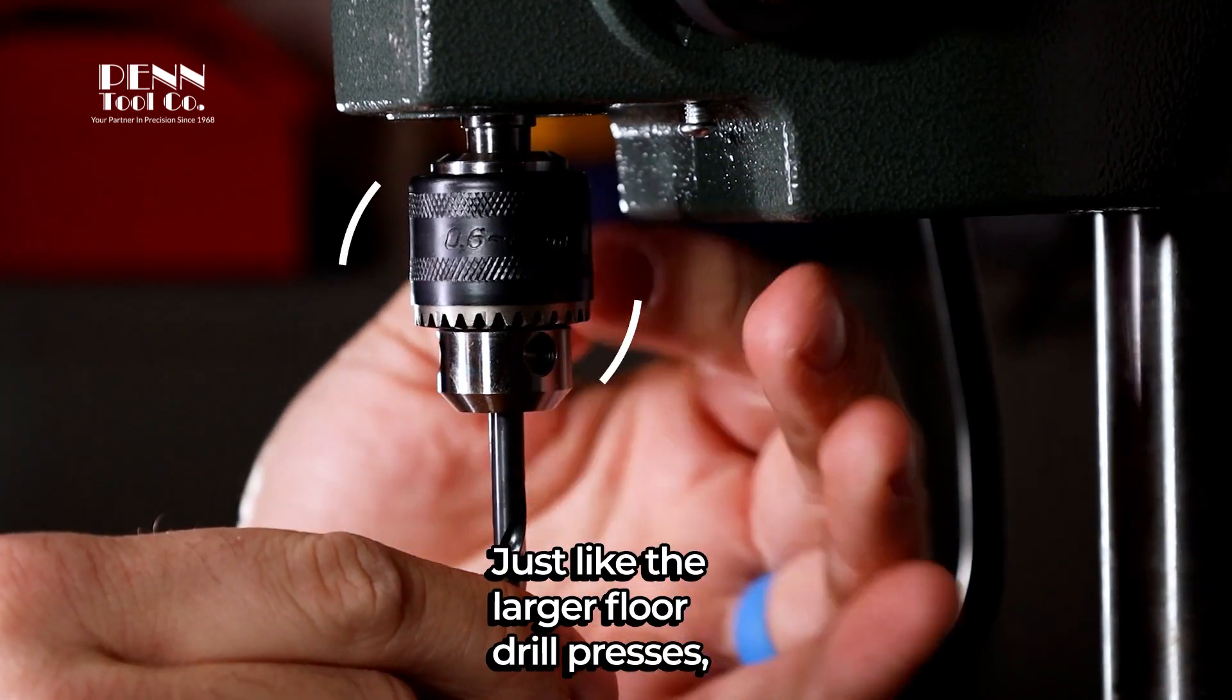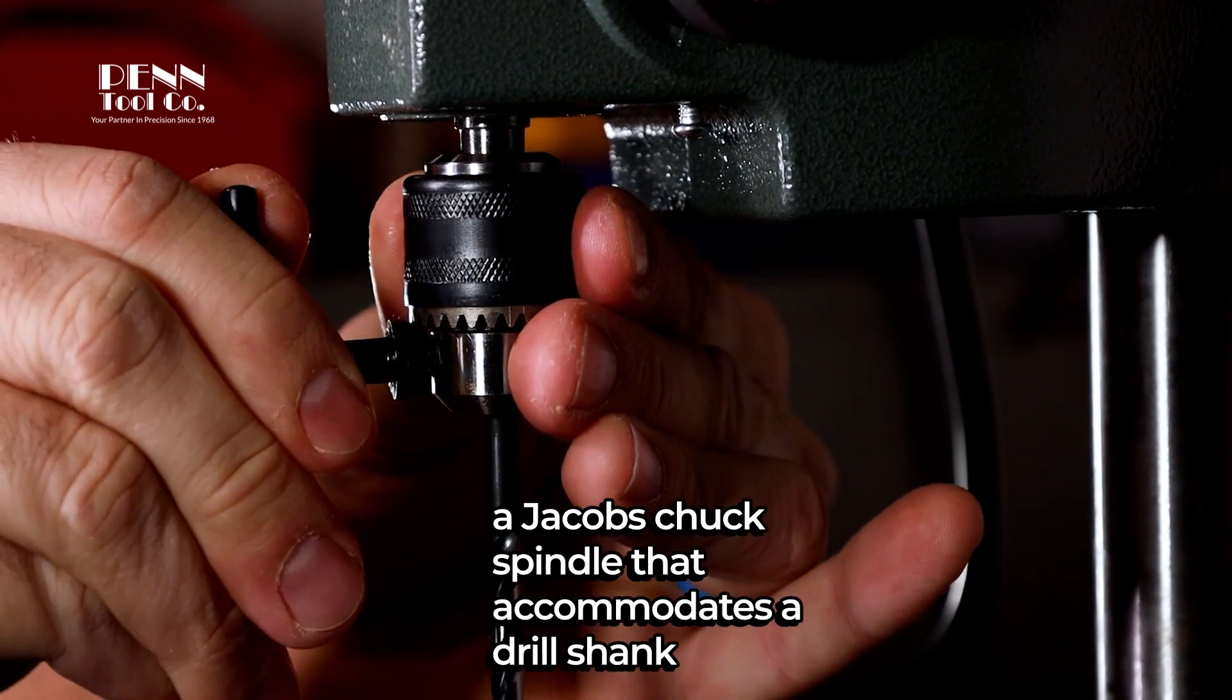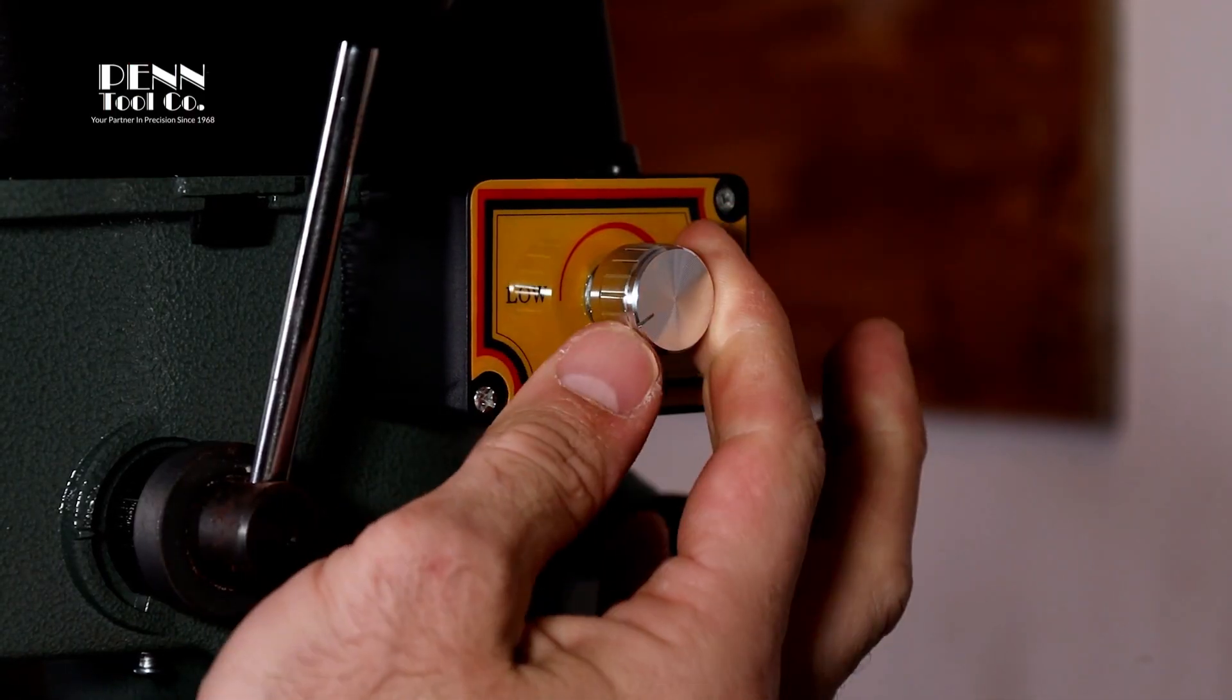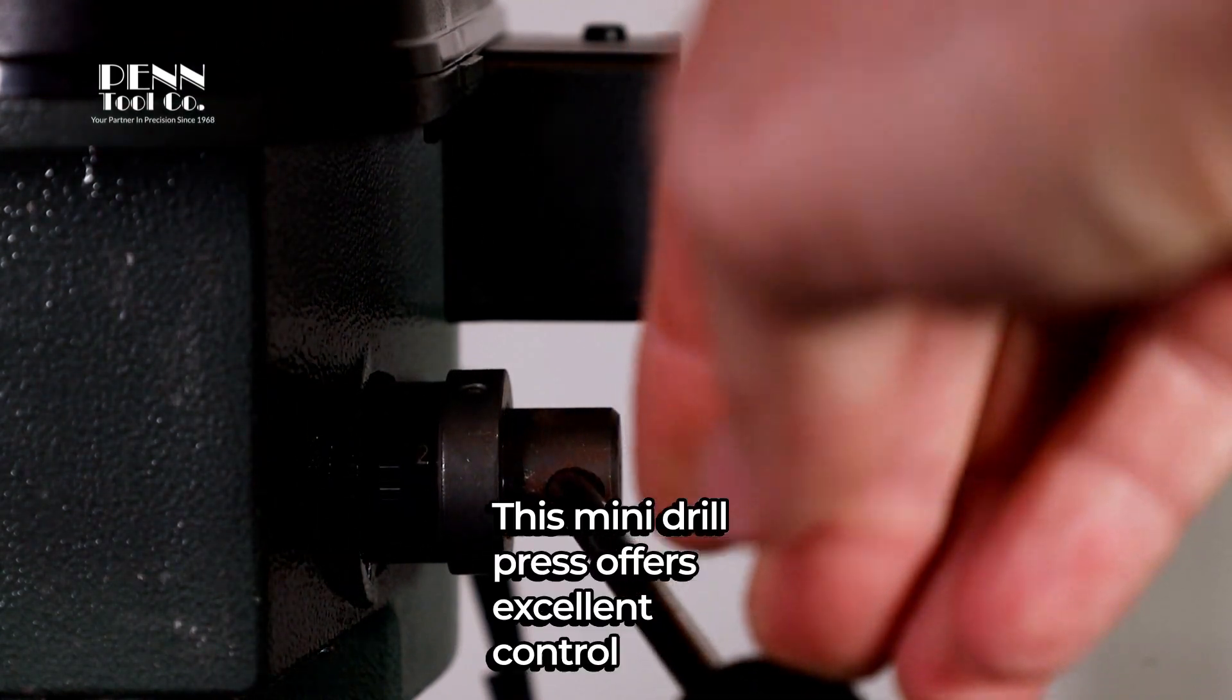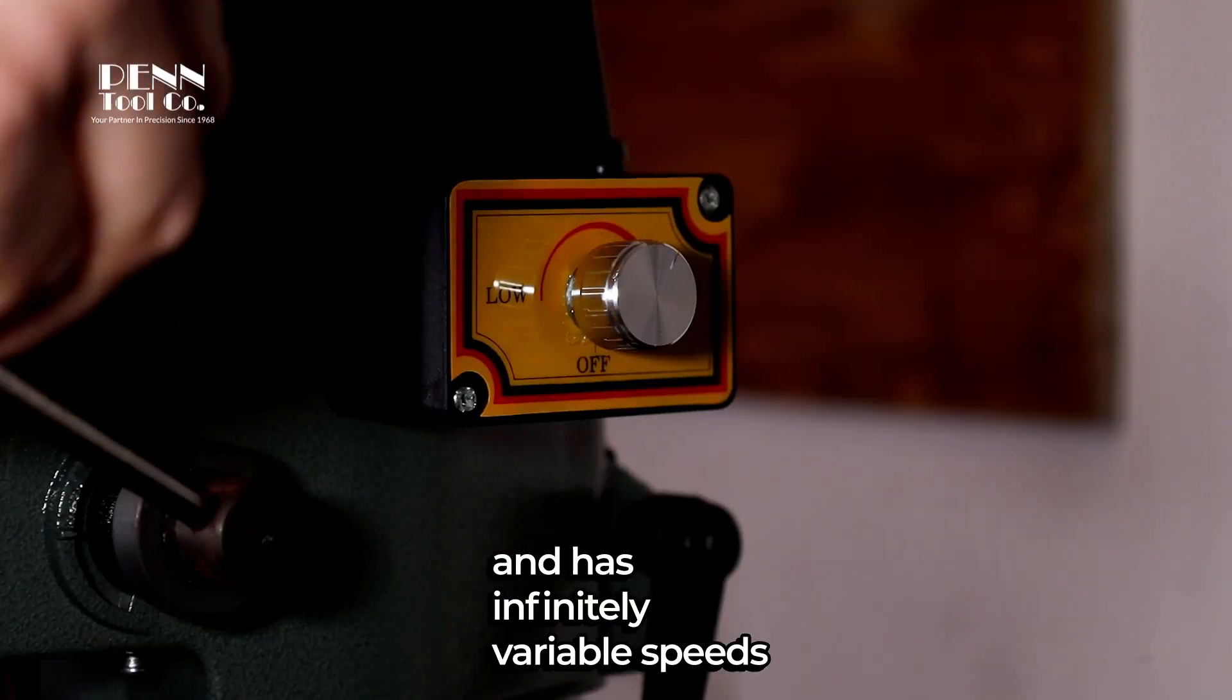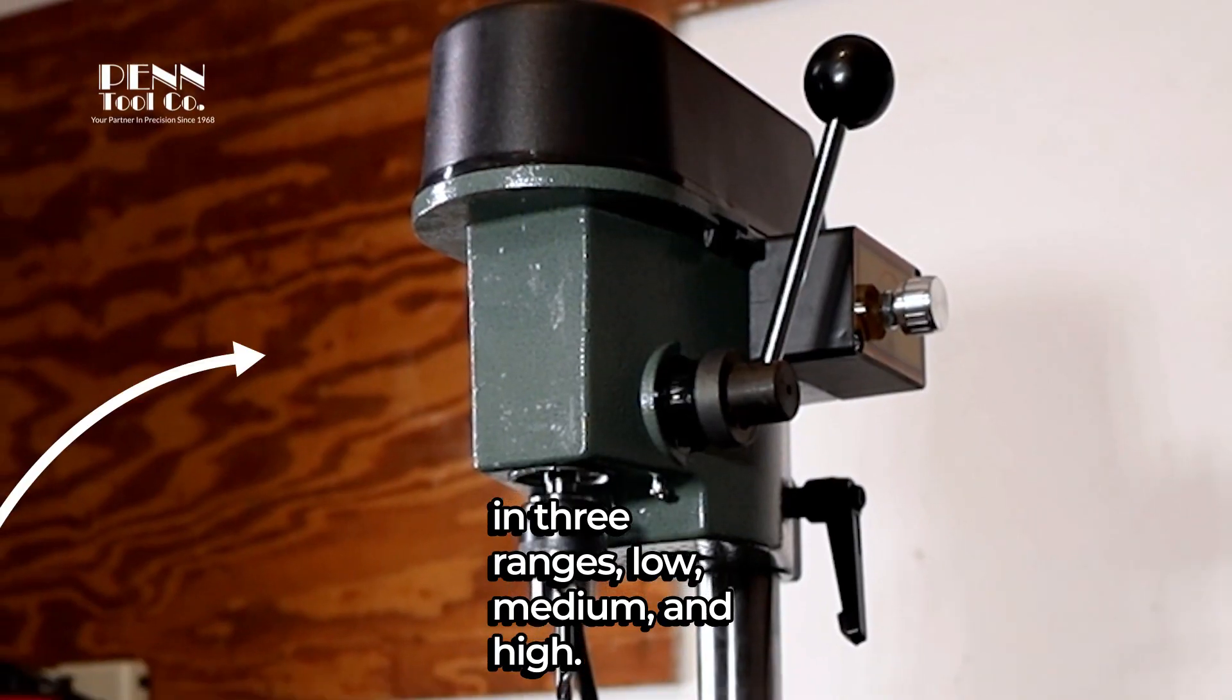Just like the larger floor drill presses, this benchtop drill press features a Jacobs Chuck spindle that accommodates a drill shank up to 6.5 millimeters. This mini drill press offers excellent control and has infinitely variable speeds in three ranges: low, medium, and high.